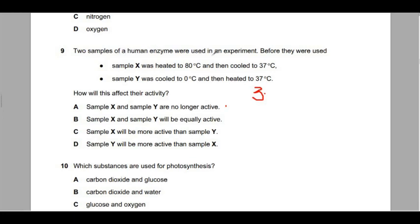The second one I'm going to read to understand. So two samples of a human enzyme were used in an experiment. Sample X was heated to 80 degrees Celsius and then cooled back to 37. Now what's funny about 37? Remember in the video we said 37 is the optimum temperature, so we expect best enzyme activity at 37.